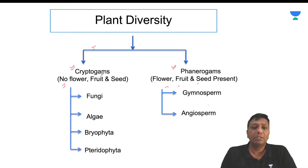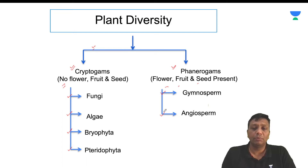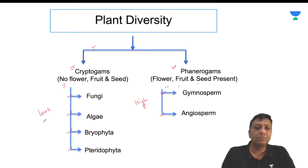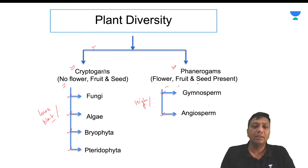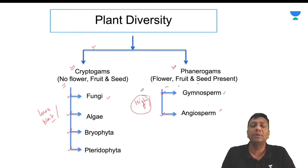In the case of cryptogamous plants — those without flower, fruit, and seeds — the groups are fungi, algae, bryophyte, and pteridophyte. In the case of phanerogamous plants, where flower, fruit, and seeds are present, they are gymnosperm and angiosperm. Gymnosperm and angiosperm are called higher plants, while fungi, algae, bryophyte, and pteridophyte are lower plants. So you can categorize plants as lower plants and higher plants.